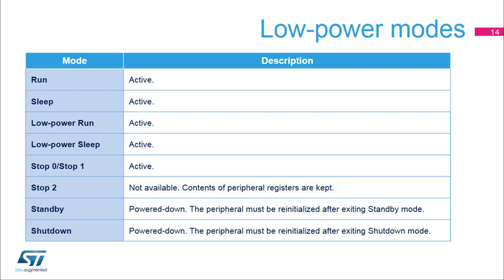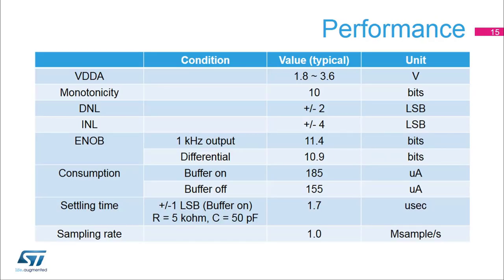The following table shows some performance parameters for the digital-to-analog converter. The DAC can work between 1.8 and 3.6 volts. 10-bit monotonicity is guaranteed. Power consumption is 185 microamps when the buffer is enabled and 155 microamps when the buffer is disabled. By using sample and hold mode, the current consumption can be drastically reduced, and less than 1 microamp current consumption is possible depending on the condition and hold capacitor characteristics.